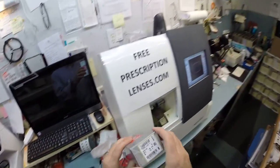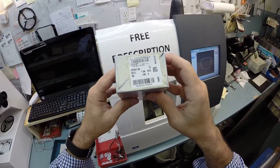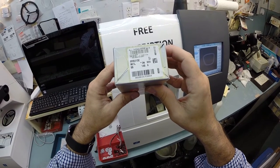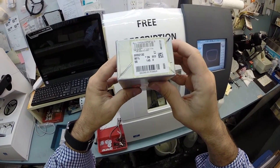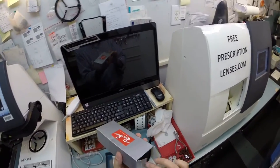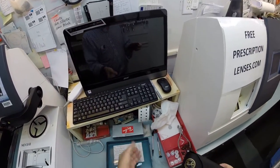With the help of my GoPro camera, I'm going to show you how I cut transition bifocal lenses for your Ray-Ban 2132 New Wayfarer color 901L, which is the classic shiny black and the 55 eye size.